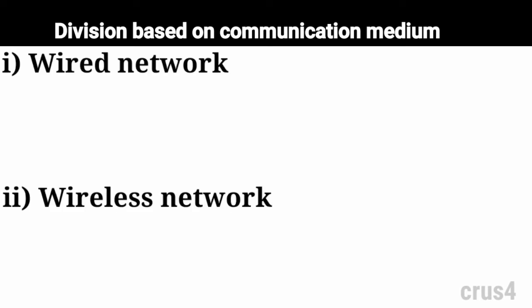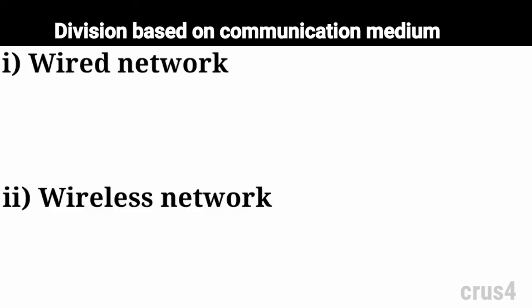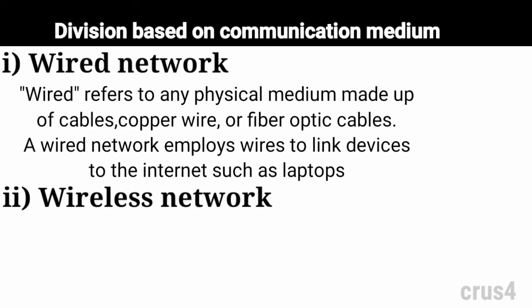Division based on communication medium has two basic types: wired network and wireless network. Wired network: wiring refers to any physical medium made up of cables, copper wire, twisted pair, or fiber optic cables. A wired network employs wires to link devices to the internet or another network, such as laptops or desktops.